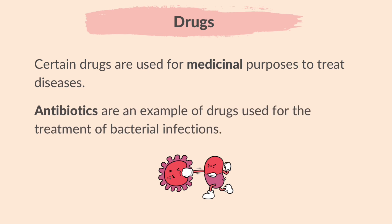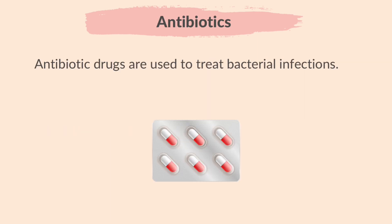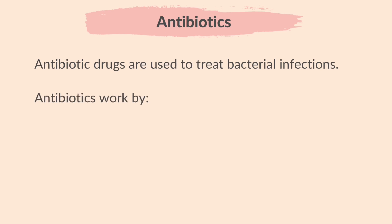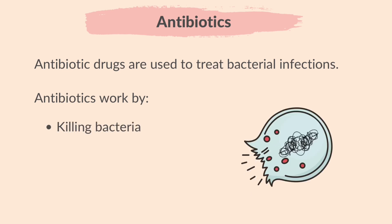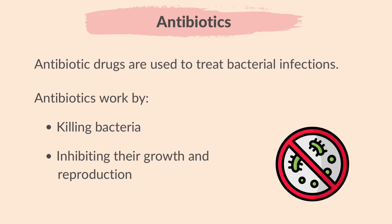Antibiotics are an example of drugs used for the treatment of bacterial infections. Antibiotics work by killing bacteria by destroying cell walls, leading to the bacterial cells bursting, or by inhibiting their growth and reproduction — that is, by preventing them from multiplying and spreading. Antibiotics only affect bacterial cells without harming other living cells.